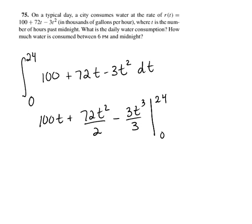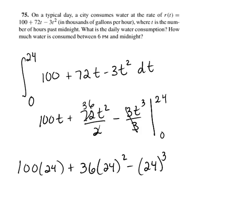So 2 goes into 72 36 times, and those 3s are going to cancel there. So when I use the fundamental theorem, I'm going to first put 24 in. So 100 times 24 plus 36 times 24² minus 24³. That's your f(b). And then f(a) is just 0, because you plug 0 in, you're going to get 0 on all of those.